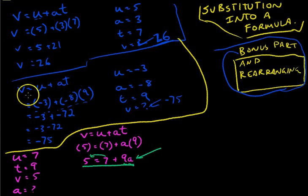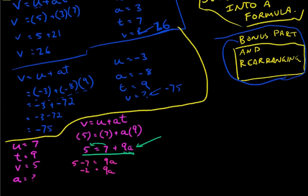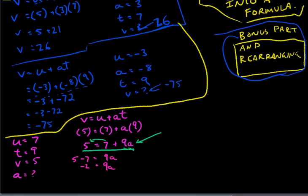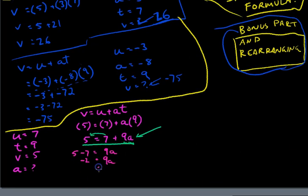It's a positive 7, so when I move it over, it becomes a negative 7. And the 9A stays on that side. That's going to give us 5 minus 7, which is minus 2, equals 9A. Now I need to get A by itself, and I do that by dividing both sides by 9. We can leave it there or type it into our calculator.